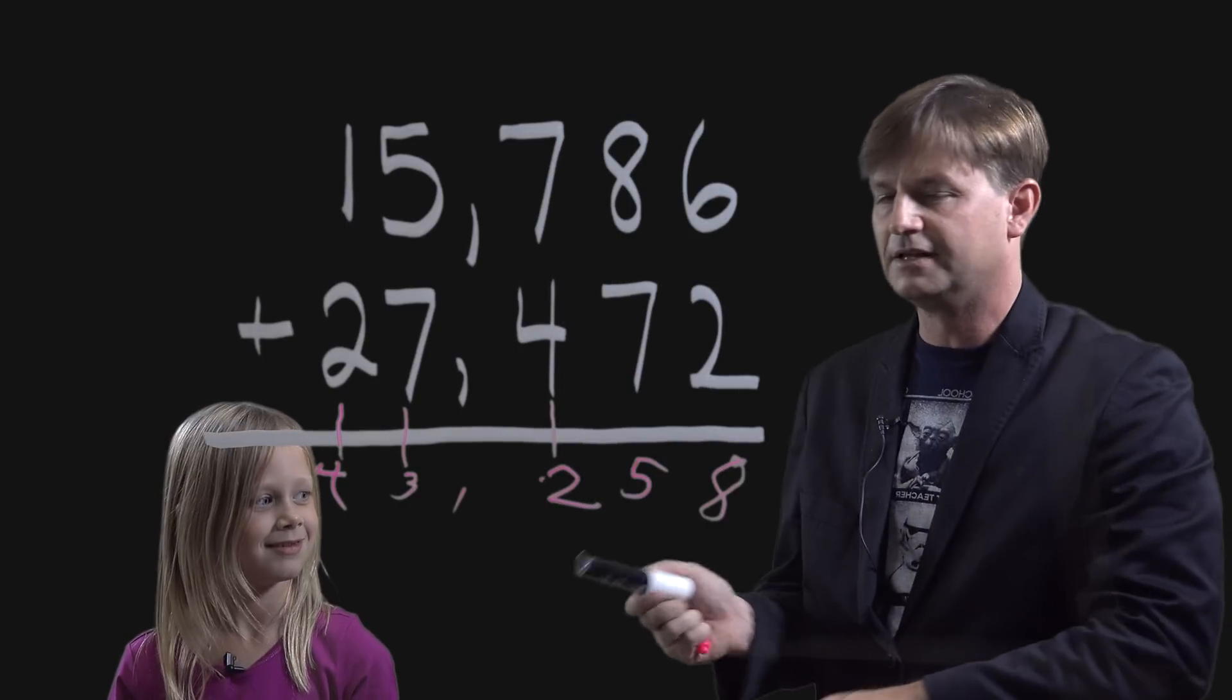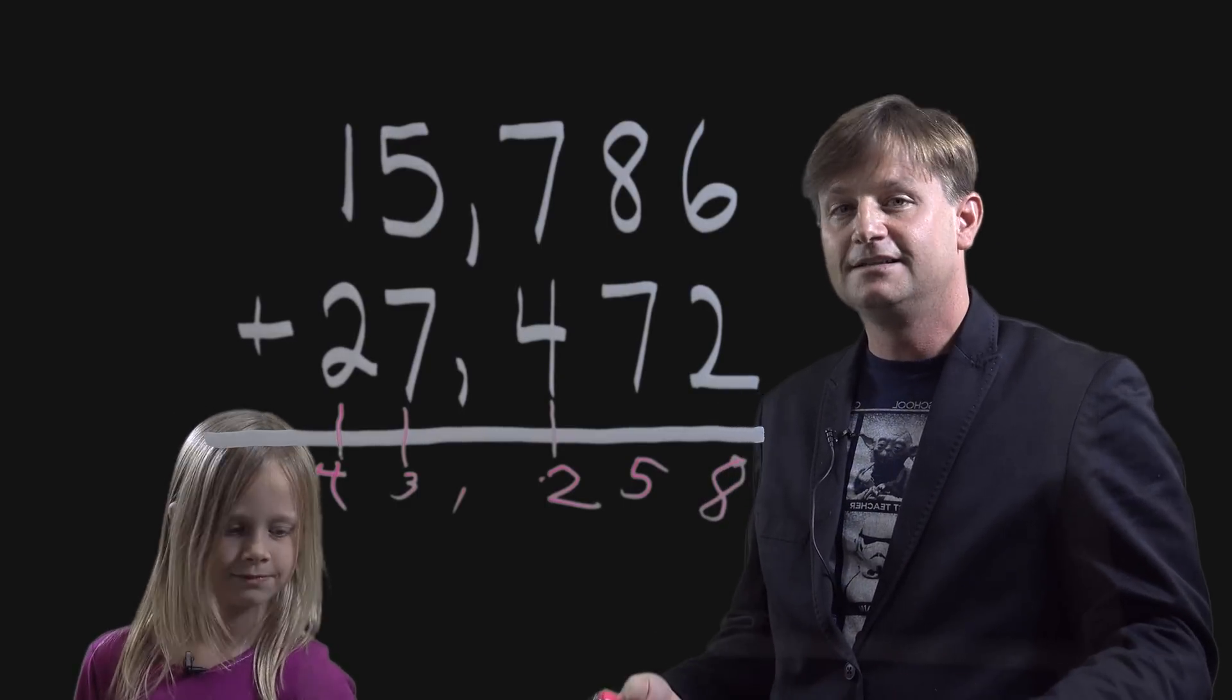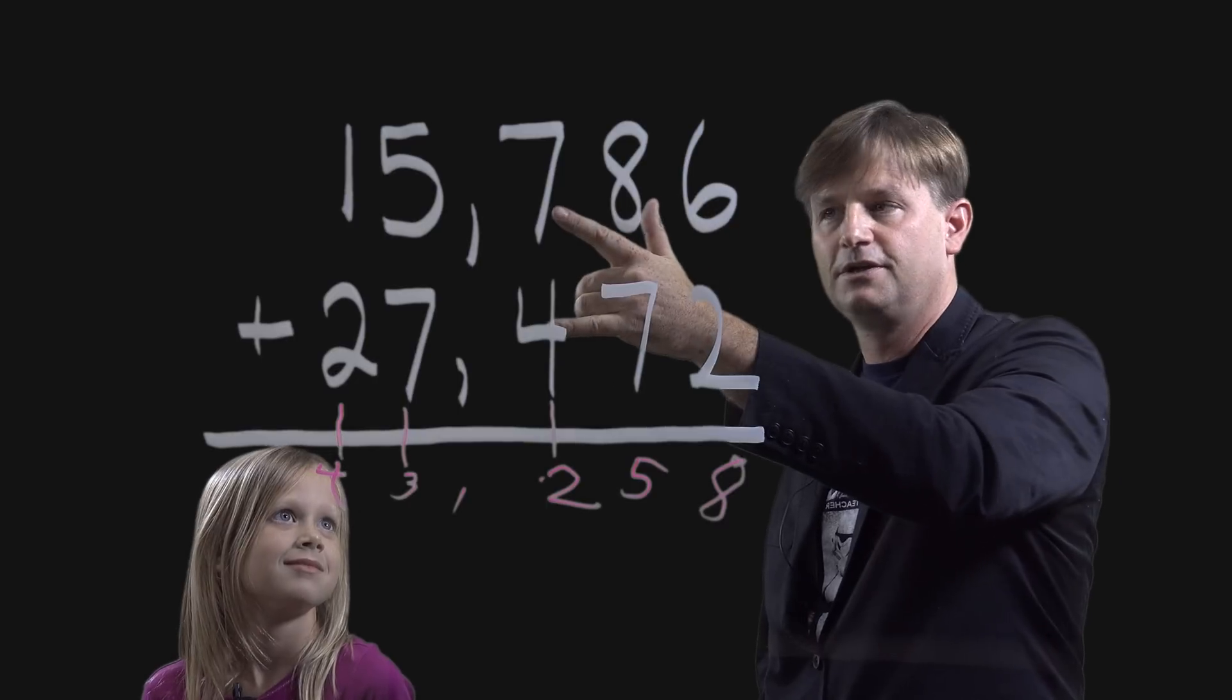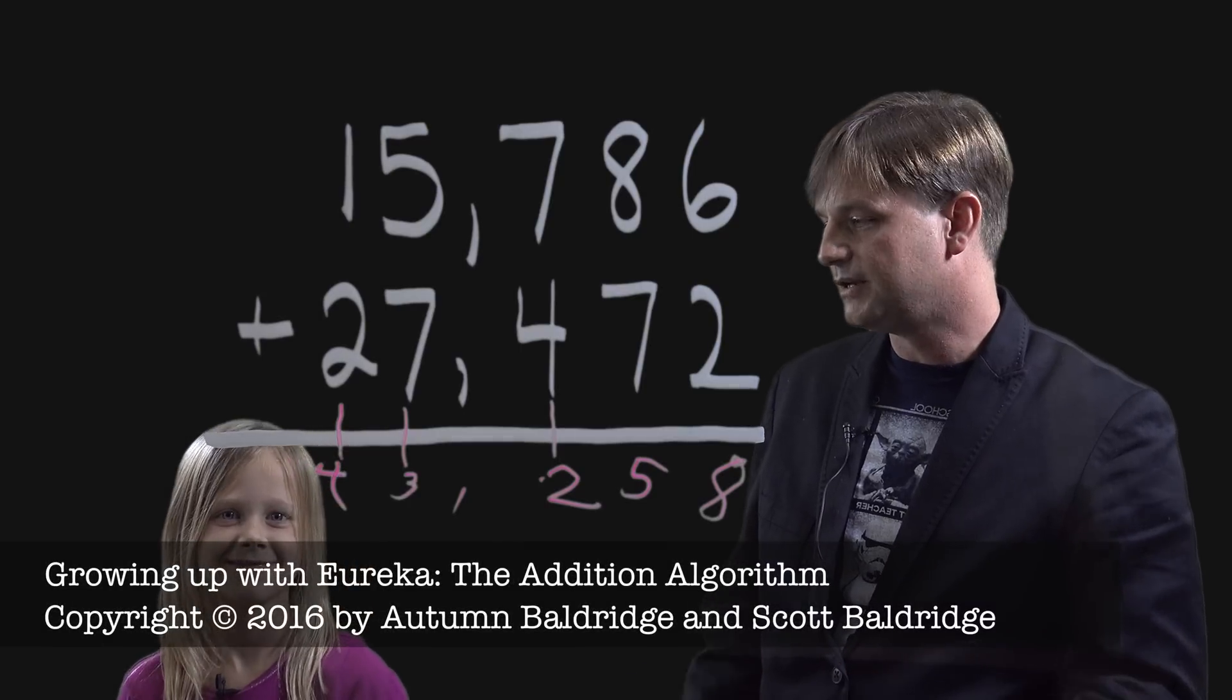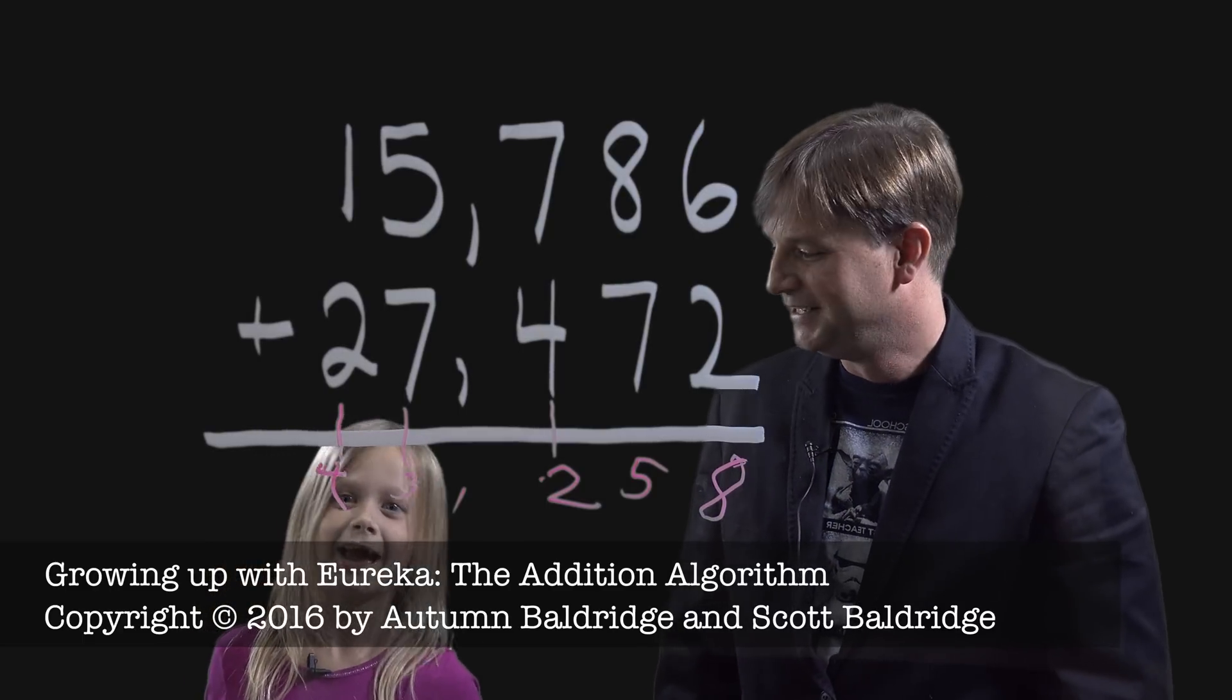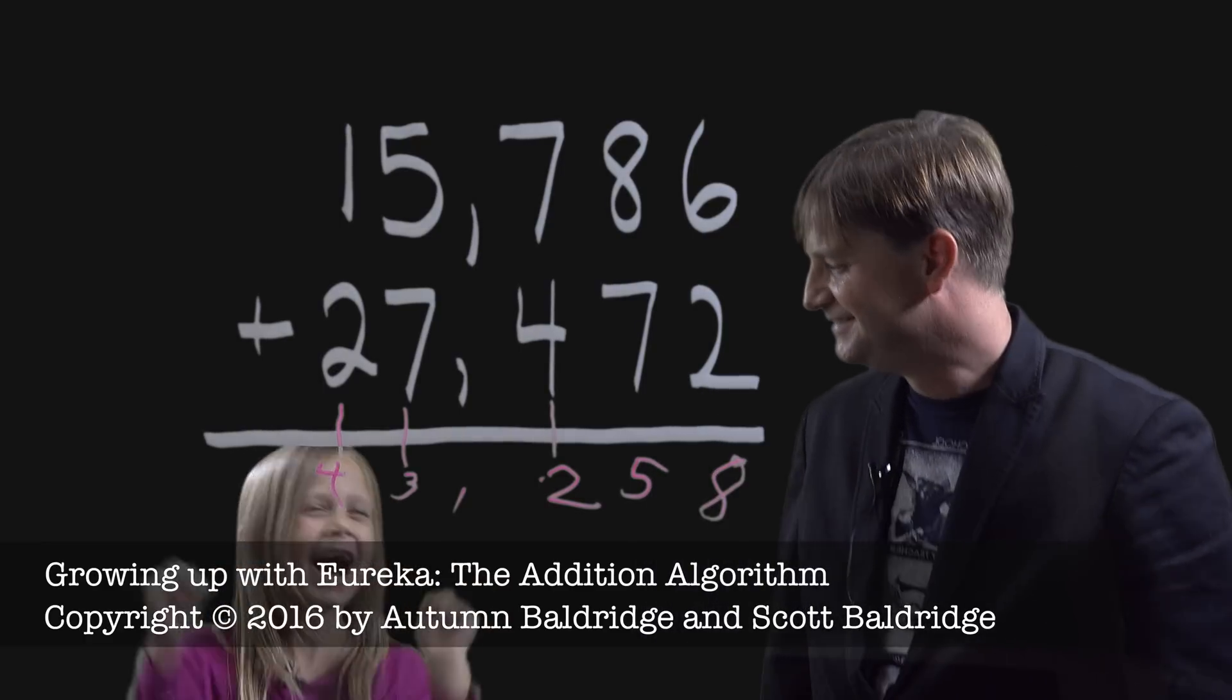Now, the nice thing about this is that one of the beautiful things about using the algorithm a lot is that the kids get to practice their one-digit facts. Look, in just doing this problem, Autumn got to practice one, two, three, four, five one-digit facts. So, doing addition algorithm is also reinforcing all those great ideas that the kids learned when they were in first grade and second grade. And that's fun. And it's fun. Bye. And I have to say something. What do you have to say? I love math!